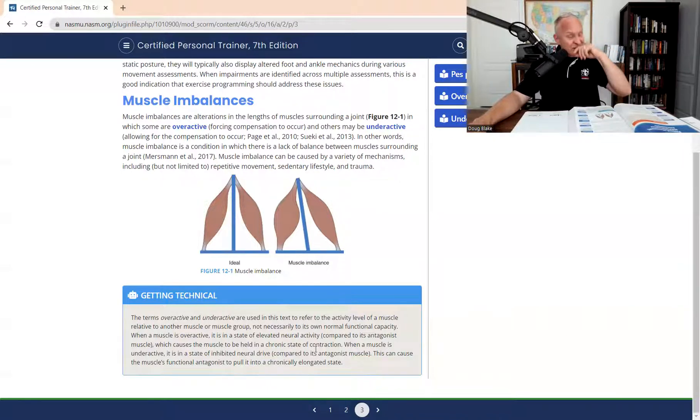Which causes muscle be held in a chronic state of contraction. Look, I'll be honest with you. The whole concept of overactive and underactive is actually pretty important, but really only when we're talking about stretching and NASM speaks to this, right? Because the whole goal of stretching an overactive muscle and then strengthening the underactive muscle is a key element to the OPT model itself.